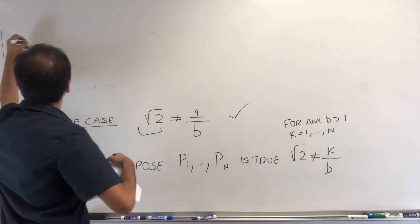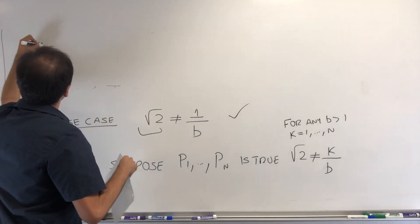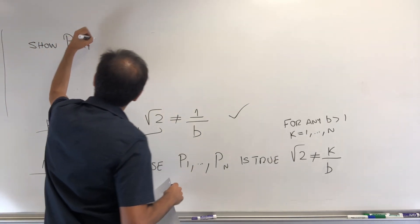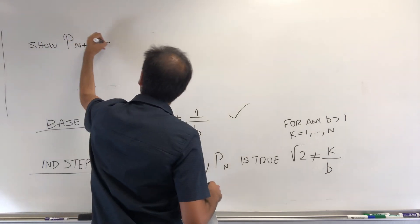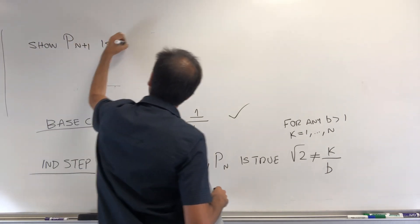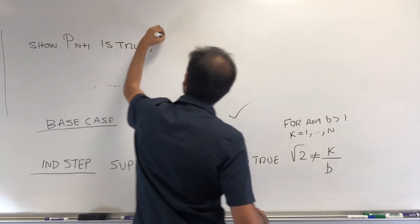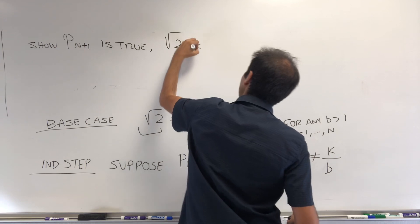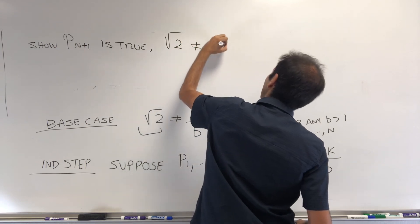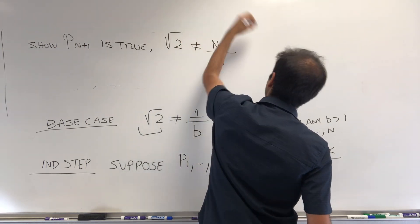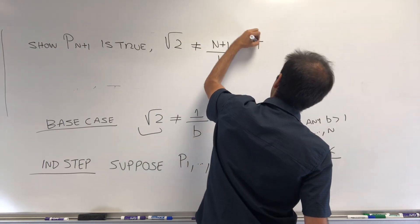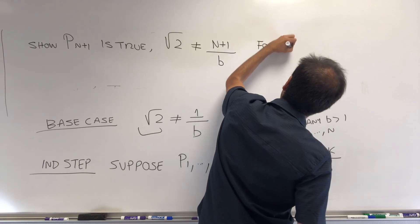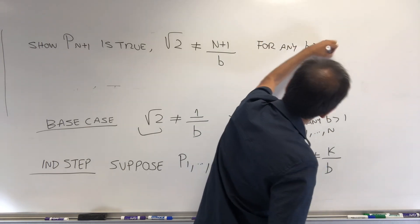And what you want to show is that you cannot write square root of two in the form n+1 over some positive number. I'll show Pn+1 is true—that is, square root of two cannot be written in the form n+1 over b for any positive b.